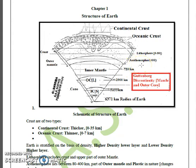At a distance of 2,900 km from the surface of Earth, we have a discontinuity called the Taylor-Gutenberg discontinuity. As you can see in the diagram, the radius of Earth is approximately 6,400 km.